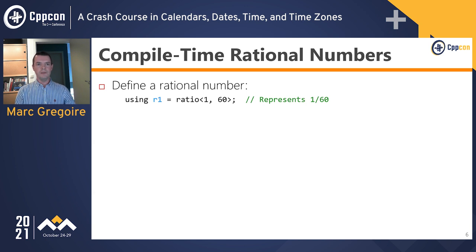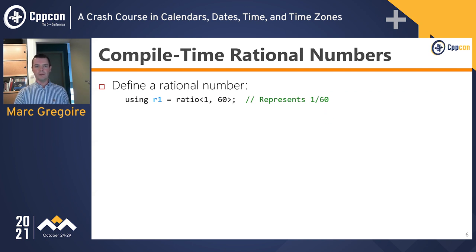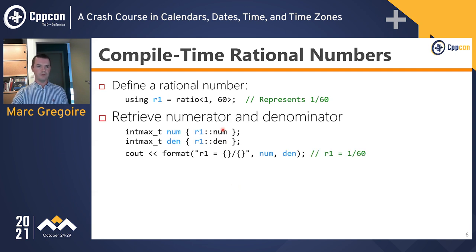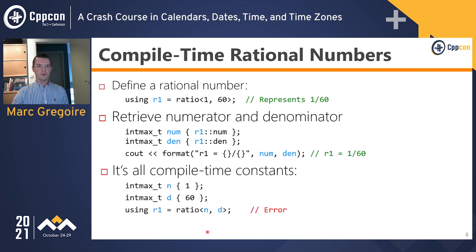Since everything is happening at compile time, we are not using normal variables. Instead, we are using types. In this first example, I am defining a type R1 which represents the rational number 1 over 60. Once you have defined this rational number, you can use the num and den members to retrieve the numerator and denominator. If you define a ratio with non-constant numerator and denominator, you will get a compilation error, because everything needs to be done at compile time.